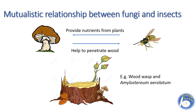Fungi also live in a mutualistic relationship with insects. Insects help fungi to penetrate wood, and in return fungi provide nutrients from plants to insects. For example, the mutualistic relationship between the wood wasp and Amylostereum areolatum fungi — they usually live on pine trees.